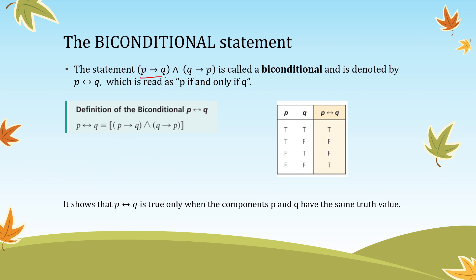This compound statement is called the biconditional, and it's denoted by P if and only if Q. This is equivalent to: P implies Q, conjunction with Q implies P, is equivalent to the biconditional statement P if and only if Q.